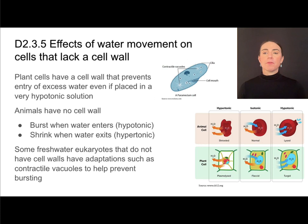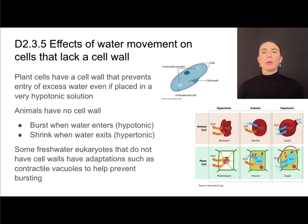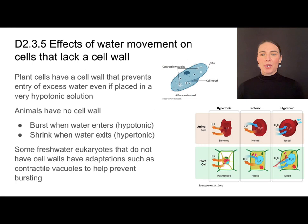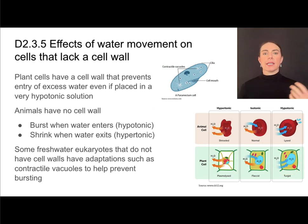Plants have a cell wall that does many things, including preventing excess water from entering. Even when a plant is placed in a very hypotonic solution and lots of water wants to enter the cell via osmosis, there's a limit to how much water can actually enter due to the rigidity of that cell wall. It prevents excess water entry and prevents the cell from bursting.